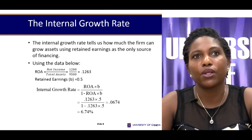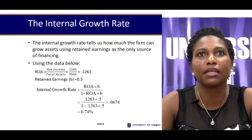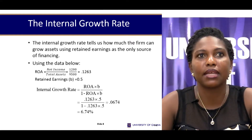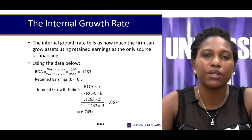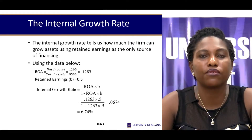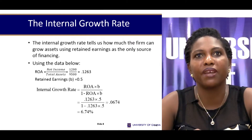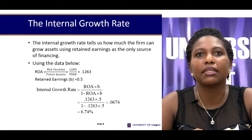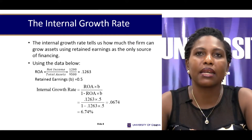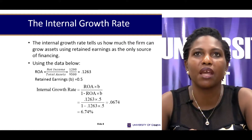For this reason, you can compute the internal growth rate, which tells us how a firm can grow assets using retained earnings as the only source of financing. It is captured as the return on assets multiplied by the retention ratio, divided by one minus the return on assets multiplied by the retention ratio. For a firm with the given figures, the maximum internal growth rate it can achieve is 6.74%, meaning that with retained earnings alone, that is how fast the firm can grow.